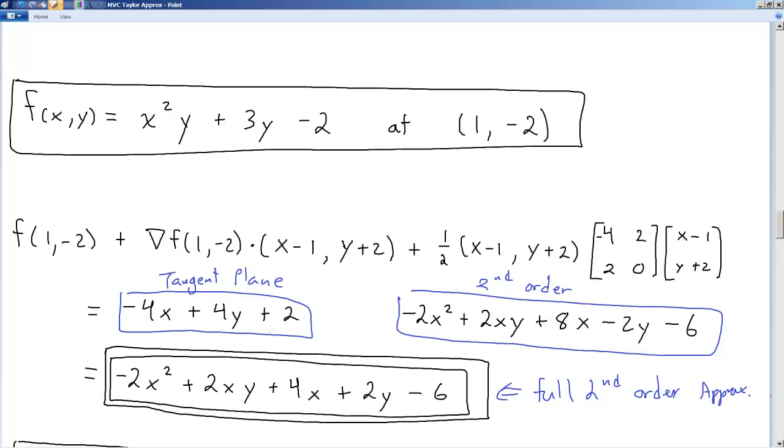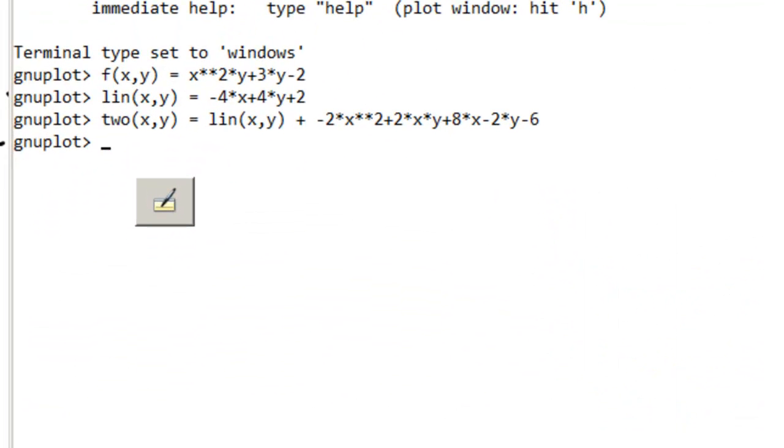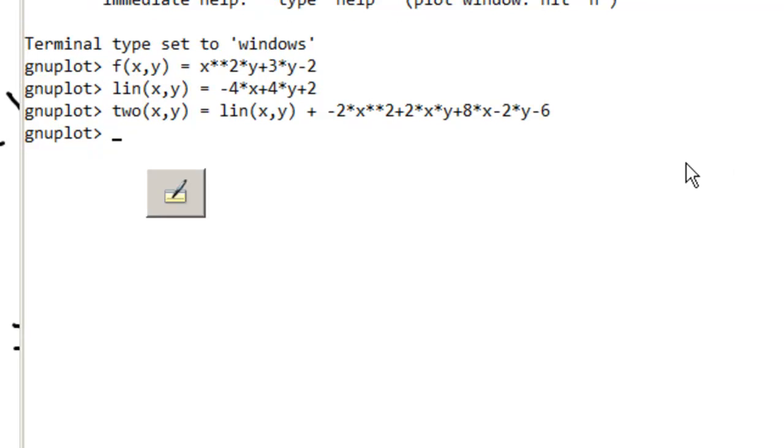Now, to visualize this real quick, I've already opened up a GNU plot window. And I want you to have a look at what's in this window. GNU plot lets you store things in memory. So I said f(x,y) is equal to x² plus... x² times y plus 3y minus 2. When you're doing exponents, you have to do the double asterisk. And you can't write 3y. You have to write 3 times y.